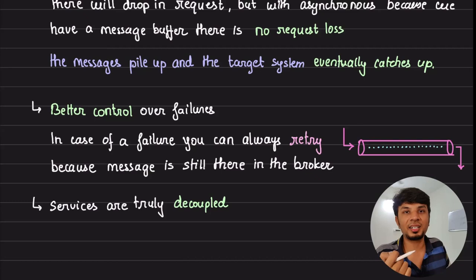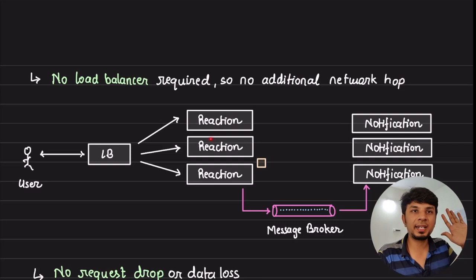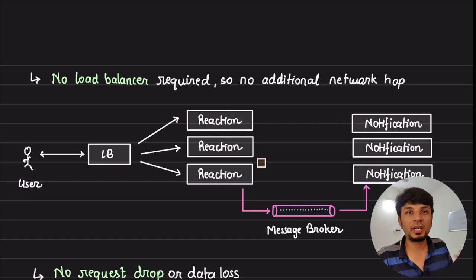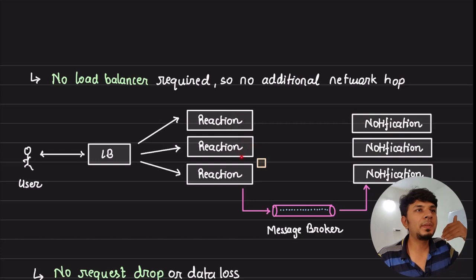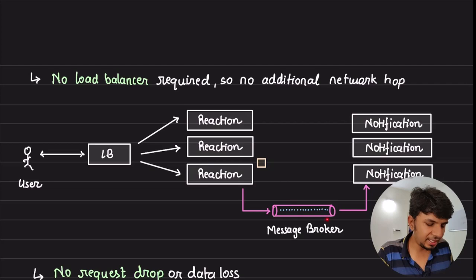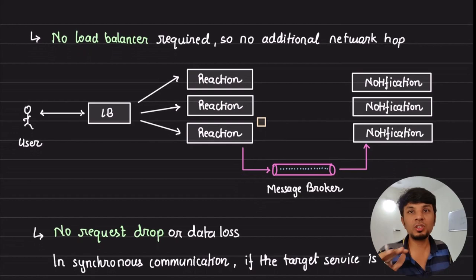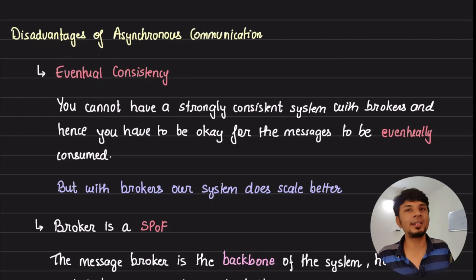Finally, your services are truly decoupled. The notification service can scale independently, the reaction service can scale independently. So long as the message broker handles the traffic, these services are totally independent. The reaction service can choose to use TCP or UDP with the end user however it wants — the notification service is unaffected. It's pure text-based messages being sent to the broker and consumed on the other side. This gives you purely decoupled services.